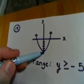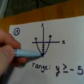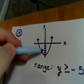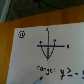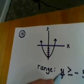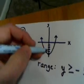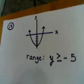The lowest y value here is negative 5, and the graph, as you move up along the y-axis, the graph keeps going with you. So, every real number that's greater than or equal to negative 5 is part of the range of this particular picture.